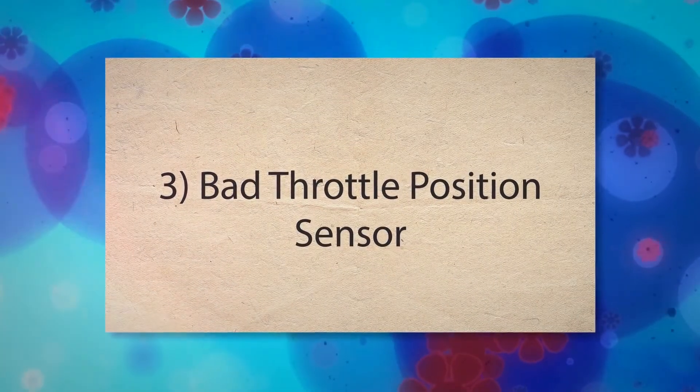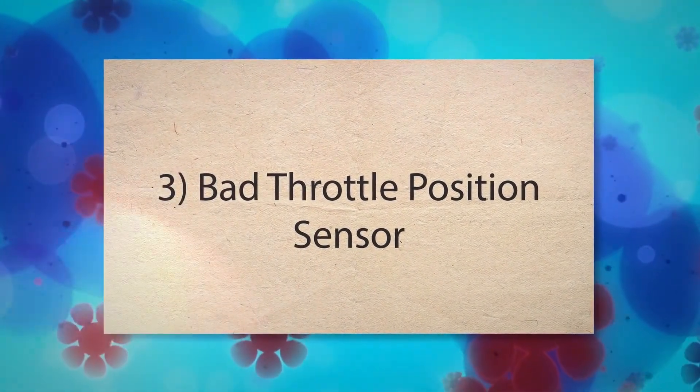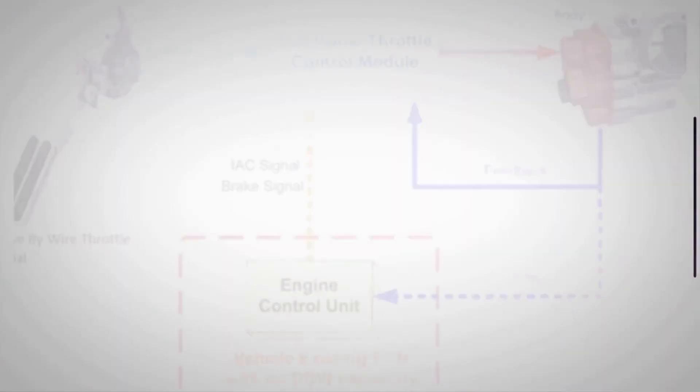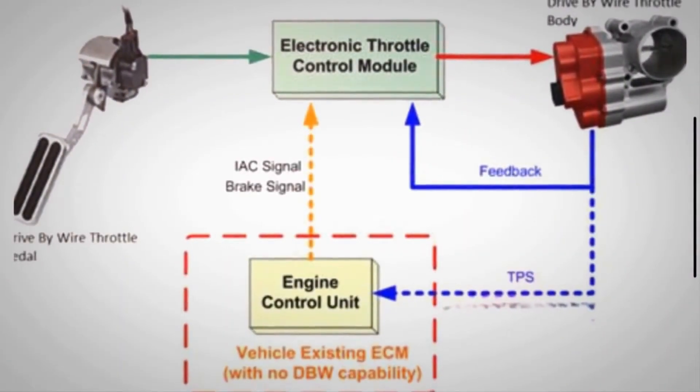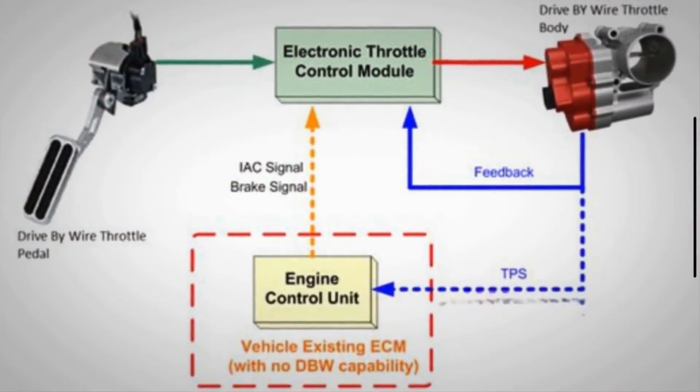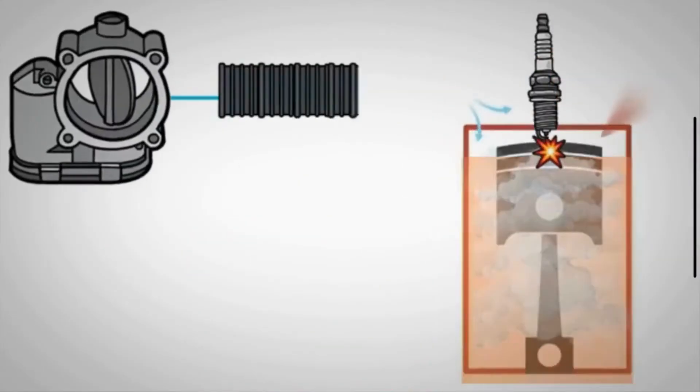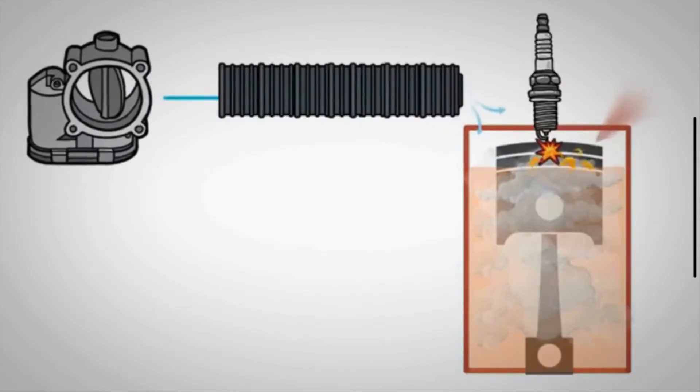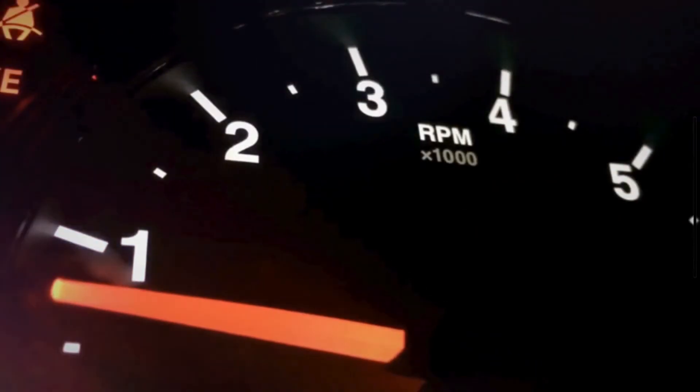Third, bad throttle position sensor. Another culprit could be the throttle position sensor. This sensor monitors the position of the throttle and sends information to the car's computer. If the throttle position sensor is faulty, it can send incorrect data to the engine control module, causing RPM fluctuations.